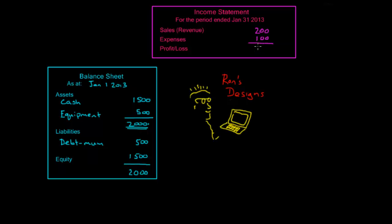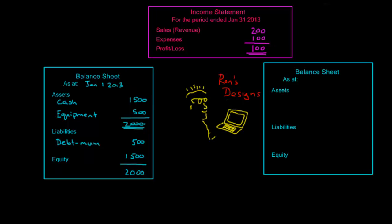Ron then wanted to know what was the financial position or the health of his company at the end of the period. So we'll need to take a look at what the balance sheet looks like at the end of the period. This is as at the end of the month — January 31st, 2013.